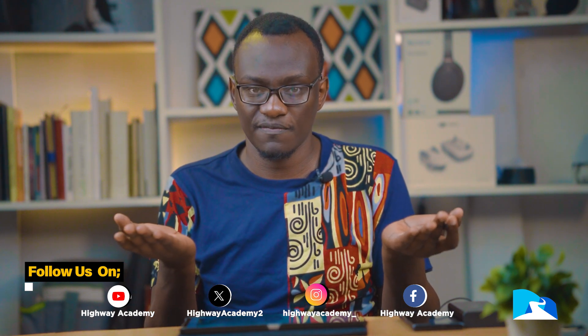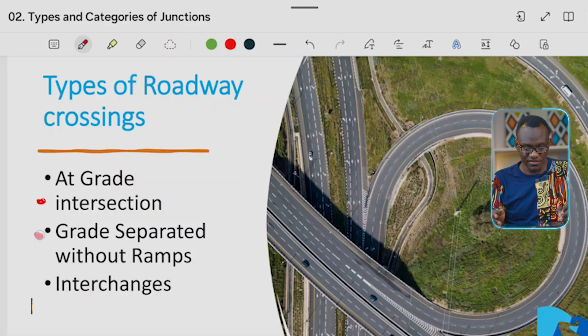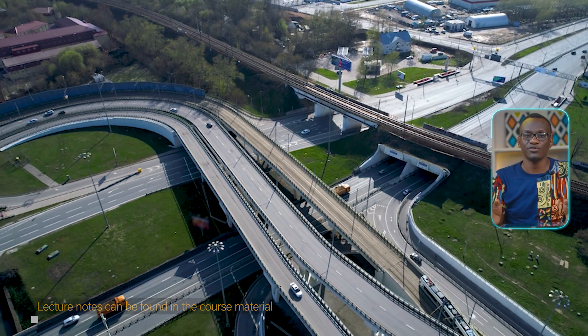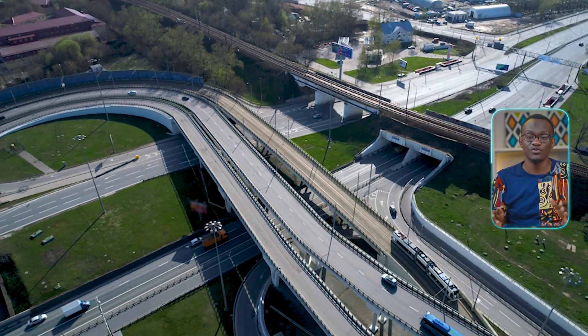Then we have the grade separated junctions without ramps. This can be like maybe there's a flyover or something, and the main reason for that is to allow the traffic, the through traffic, to move with ease. And then finally we have what we call interchanges.